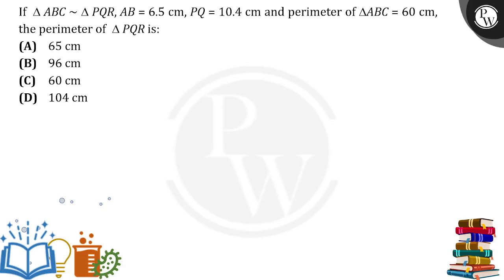Hello everyone, if triangle ABC is similar to triangle PQR, AB is equal to 6.5 cm, PQ is equal to 10.4 cm and the perimeter of triangle ABC is equal to 60 cm, the perimeter of triangle PQR is how much?